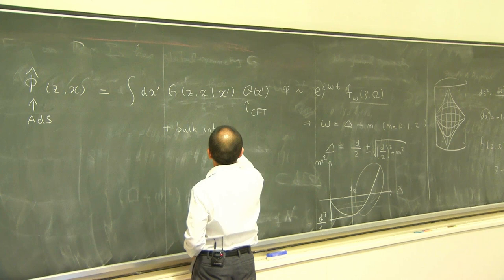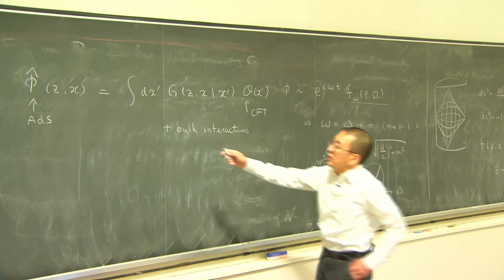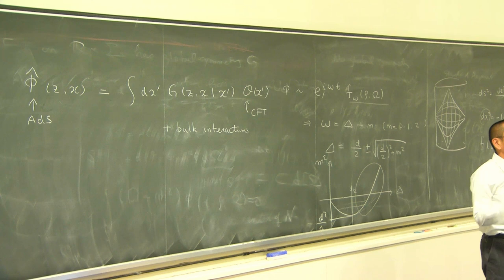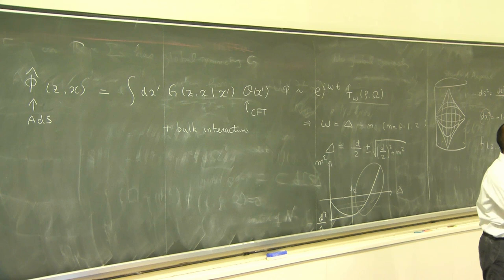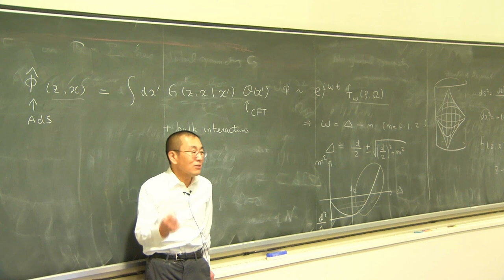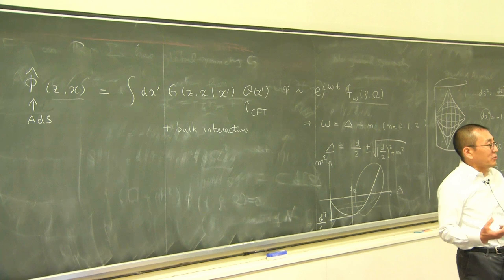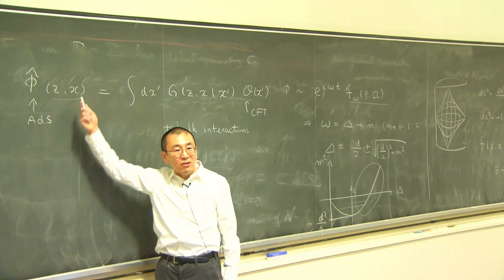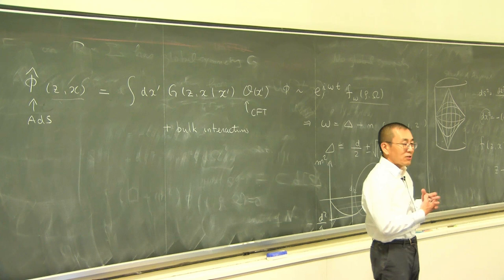There are corrections due to bulk interactions. Also, in principle, when the bulk theory is a gravitational theory with diffeomorphism invariance, there is no precise notion of a local operator in the bulk. However, in the weakly coupled gravitational theory where the Planck scale is much smaller than other scales of interest, there is a sufficiently approximate notion of local operator, correctable by including interaction with gravitational degrees of freedom.